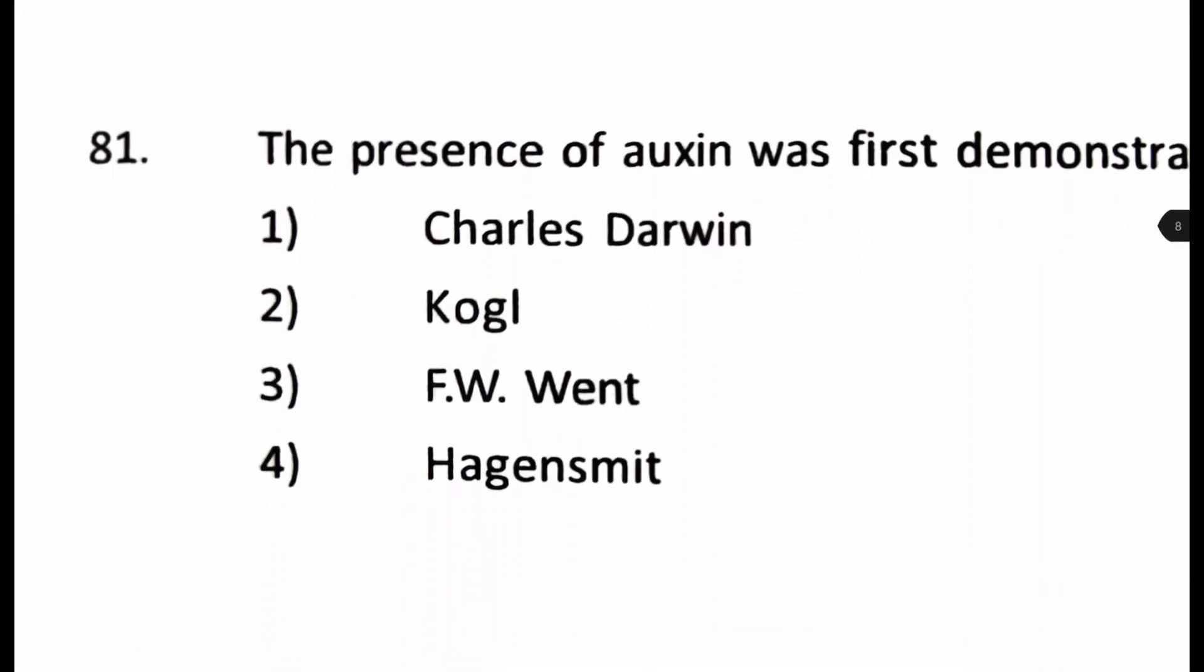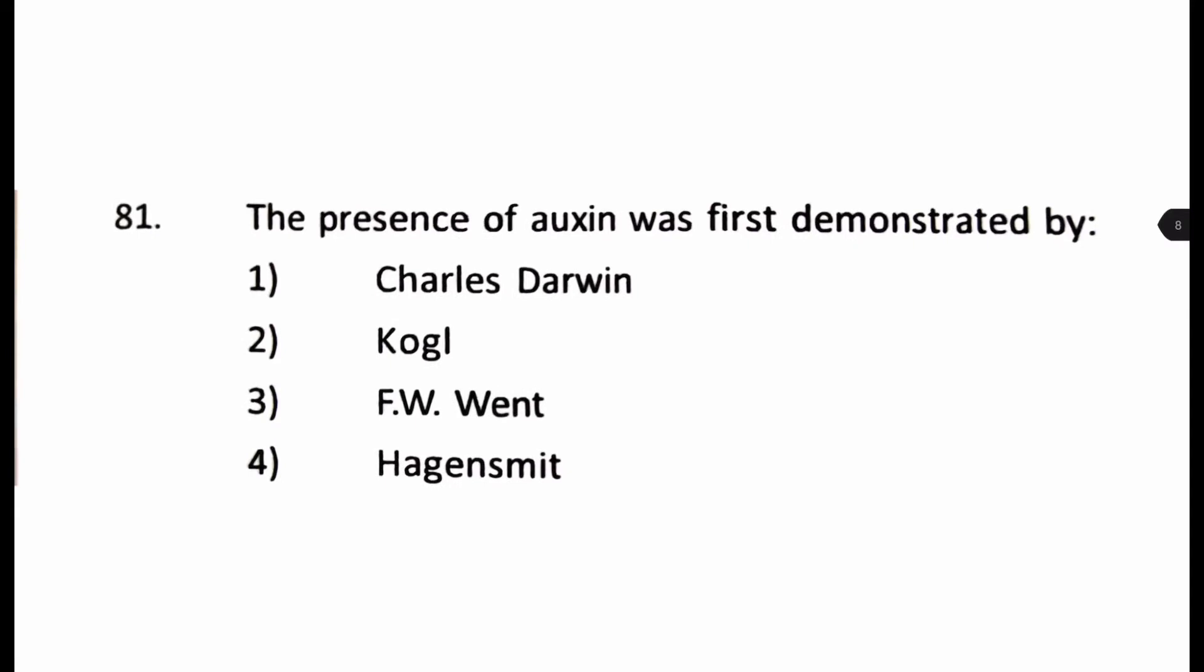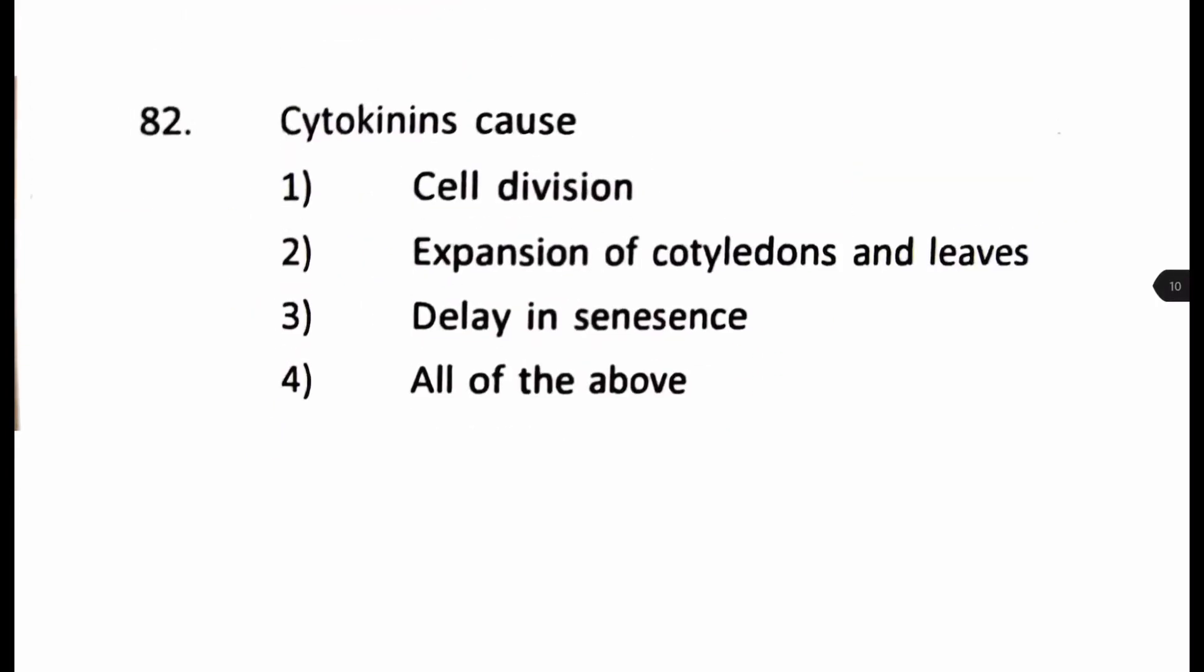Next question. The presence of auxin was first demonstrated by is it Charles Darwin, Kogel, F.W. Went or Haagen-Smit. Now we shouldn't be confused with Went over here who first did the experiment but it was first demonstrated, presence of auxin demonstrated by Charles Darwin. So our answer is number one. Next question.